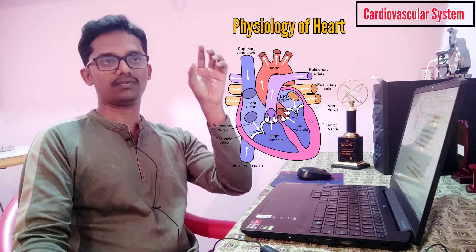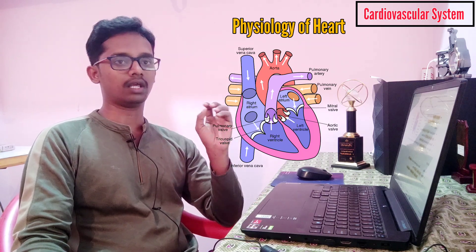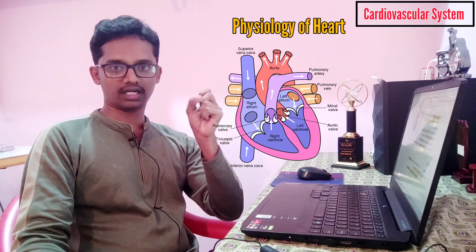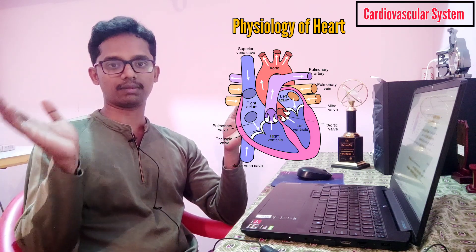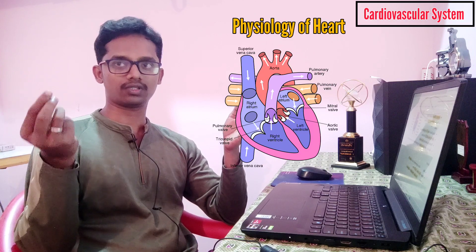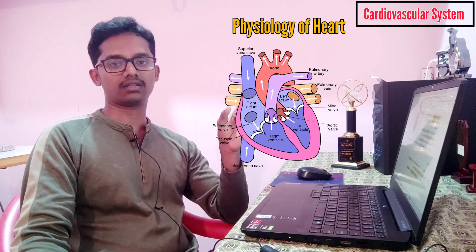From the left atrium, blood passes into the left ventricle through the bicuspid valve, also called the mitral valve. Blood then enters the left ventricle. The left ventricle has a thicker muscular wall compared to the right ventricle, because it pumps blood to the entire body — a much greater distance than the lungs.